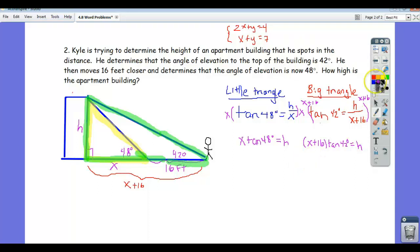So now, what's nice is I've got h is equal to this thing, and h is equal to this thing. Well, when two equations are set equal to the same variable, I can set those equations equal to each other. So now I can say that if h equals this and h equals that, I can substitute that right in there. So I get x plus 16 times tangent 42 degrees equals x times tangent of 48.